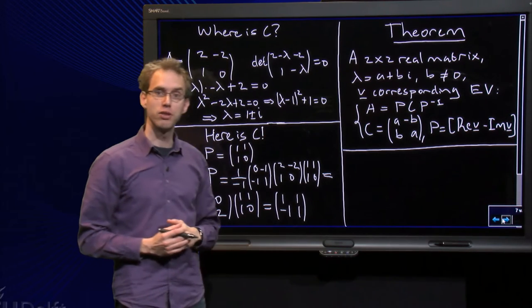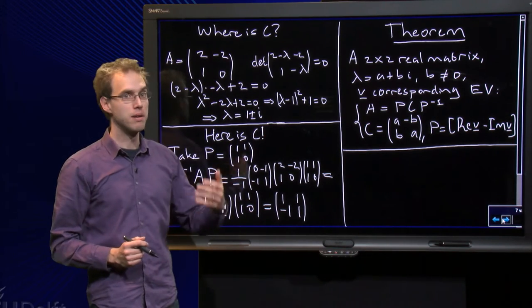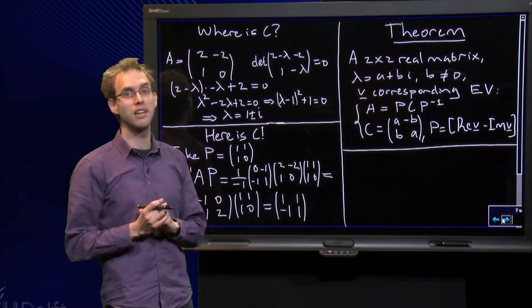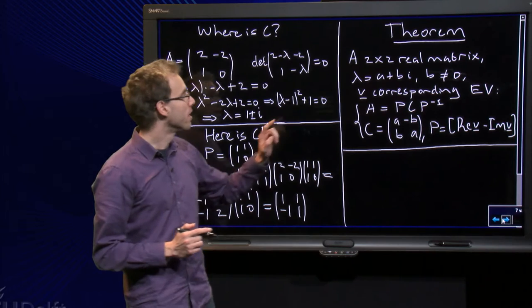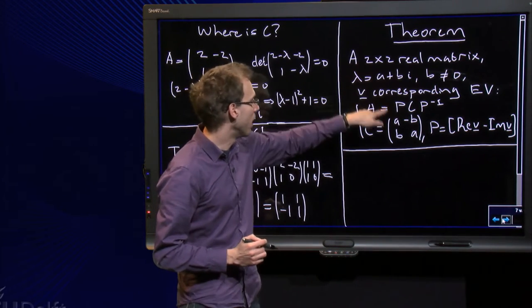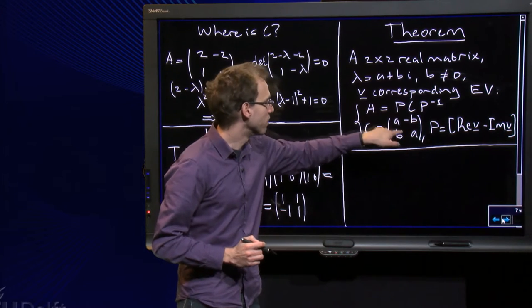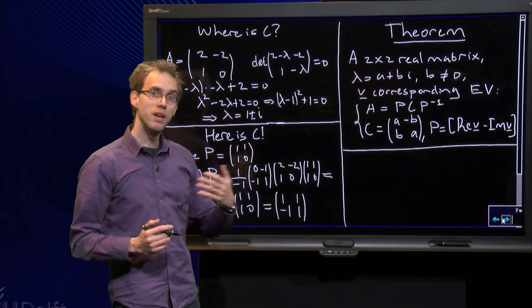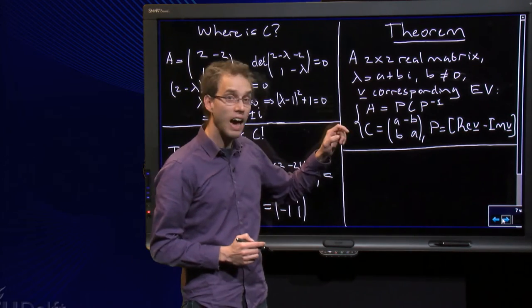Well, we know then A equals P C P inverse, so A might not be a C-matrix, but A is always similar to a scaling rotation matrix, where C can be found using the eigenvalue lambda. The a is over there, and the b and the minus b over there.